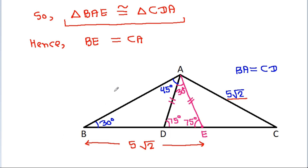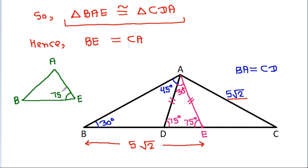In triangle BAE, this angle is 75 degrees and this angle is also 75 degrees, which means BA will be equal to BE. And since BE is 5 times the square root of 2, BA equals 5 times the square root of 2.